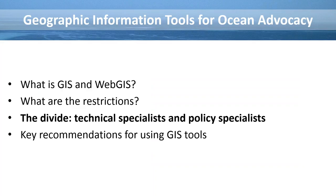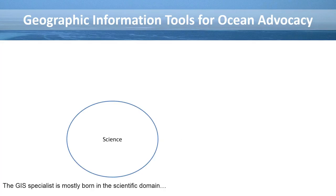Now I want to make a short sidestep to something I encounter a lot in my work: the divide between technical GIS specialists and less technical people — in this case, policy specialists. There's a big divide. GIS specialists are mostly born in the scientific domain with traditional schooling in statistics, geography, geoinformatics, or other hard-science areas. Their perspective on understanding data can be totally different. Sometimes a scientist thinks: if we prove that human activity is causing severe damage in that area, then we're done — we make the proof, and it's obvious.